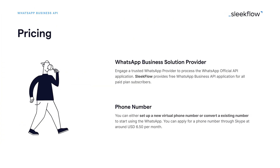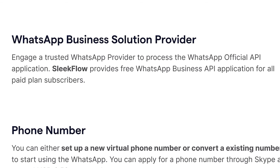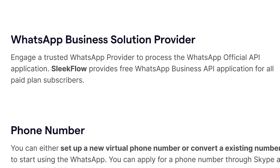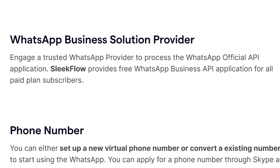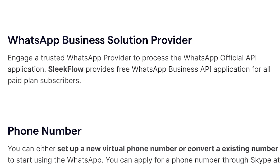Since we've covered the flexible pricing charged by WhatsApp, it's time to talk about the fixed API service provider cost. We strongly recommend for you to choose a business solution provider verified by WhatsApp's mother company, Meta. They provide authorized services that stop your businesses from being banned due to spam message reports.